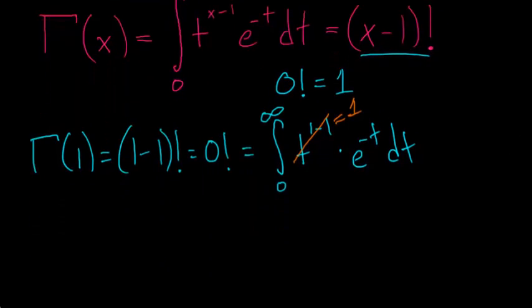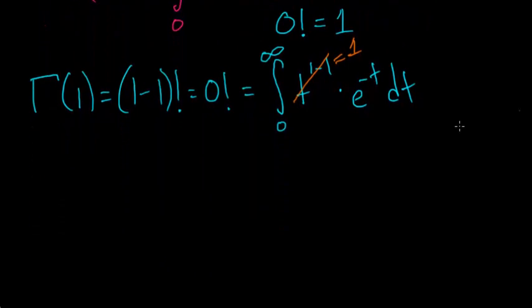So to evaluate this integral, since it's improper, we need to replace the top bound with a variable and then take the limit as that variable approaches infinity. So let's replace it with the variable b, and take the limit as b approaches infinity of the integral from